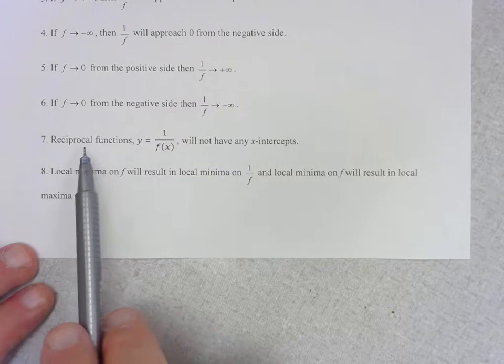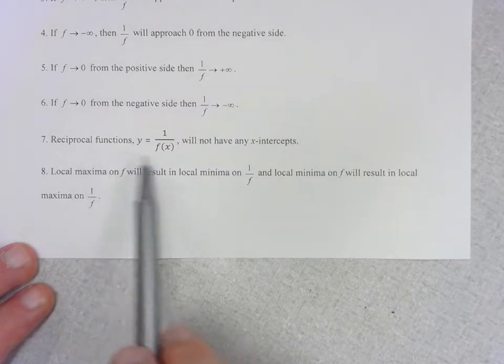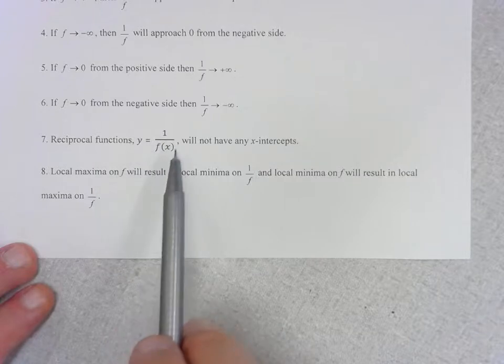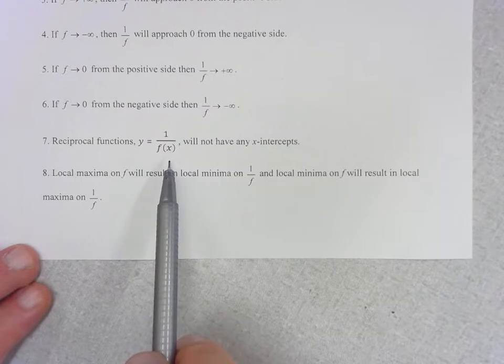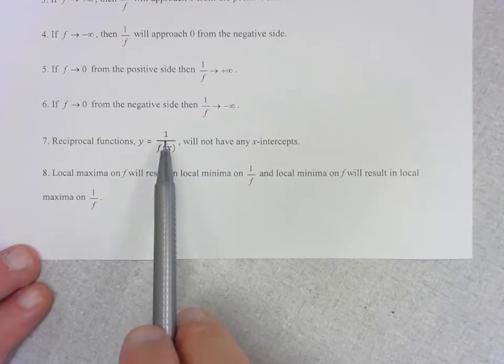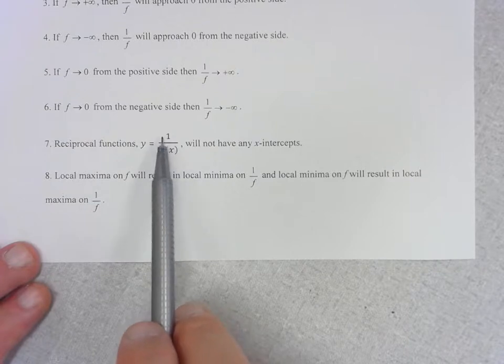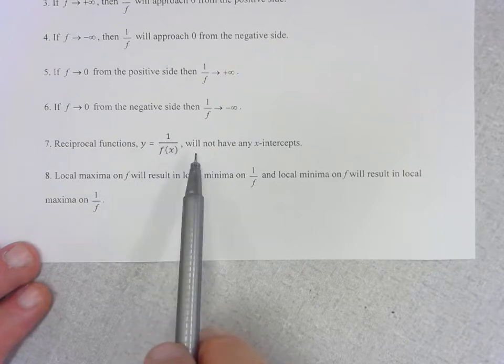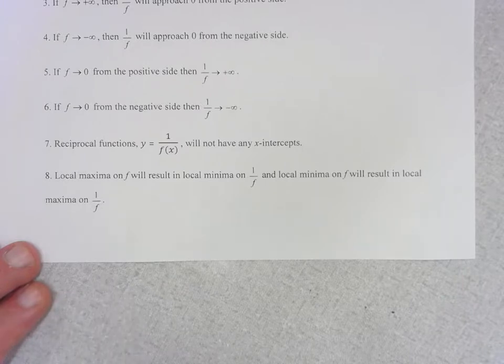And this is the other thing that I would like to talk about is remember that a reciprocal function is essentially just a fraction. And we realize that the only way for a fraction to be equal to 0 is if the numerator is 0. But when we're taking the reciprocal, the numerator is always equal to 1. Hence, you can't have any x-intercepts when you're working with these reciprocal functions.